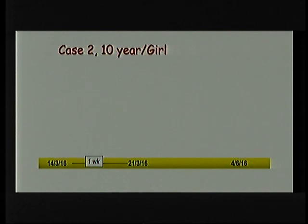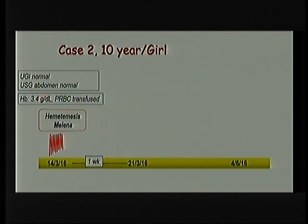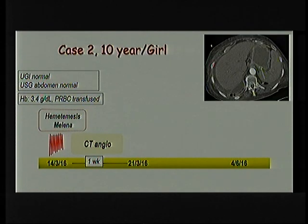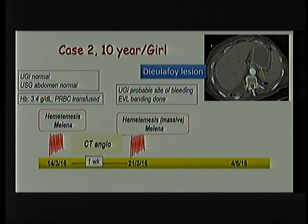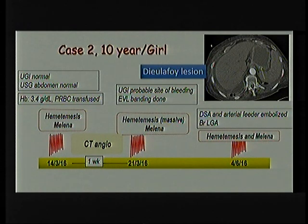Another case: a 10-year-old adolescent girl who came with hematemesis, melena, and large volume bleeding. Upper GI endoscopy and ultrasound were normal. CT angiography after stabilizing her showed a somewhat prominent vessel in the lesser curvature of the stomach — this was actually a Dieulafoy lesion. She bled again during investigations; repeat endoscopy at the time of bleeding showed a visible bleeding spot and we performed banding. Three months later she was fine, then re-presented with hematemesis, and we performed digital subtraction angiography and embolization of the feeder.